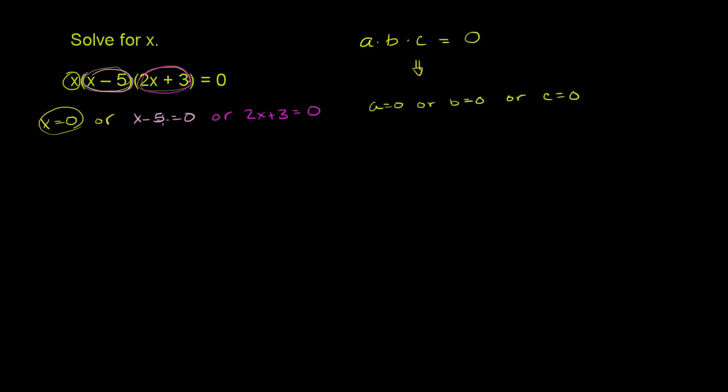To find the other solutions, let's solve these equations. So if x minus 5 is 0, if you add 5 to both sides of that equation, we get x is equal to 5. So that is our second solution. x could be equal to 5.